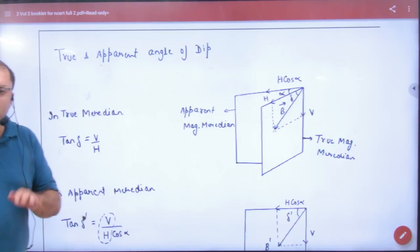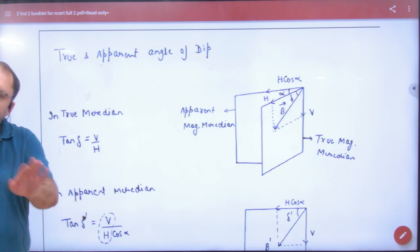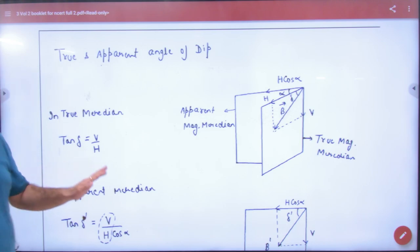Next important topic is true and apparent angle of dip. In this competition there will be a question. I heard that this chapter is gone. Now let's check from the net. In competition, the main need is true angle of dip and apparent angle of dip.